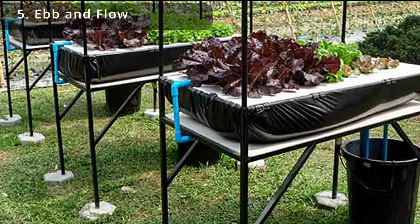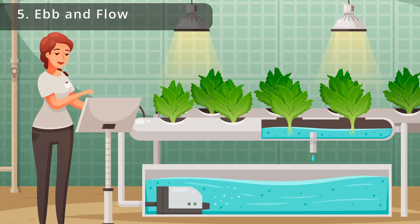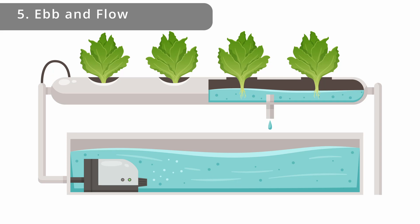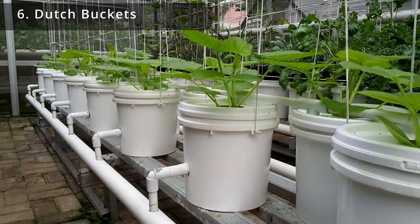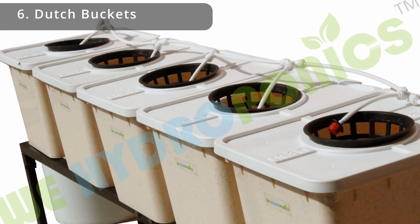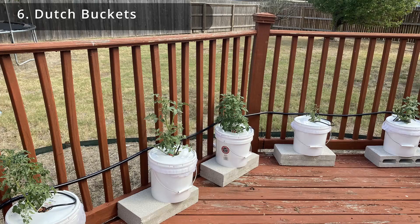The ebb and flow system, also known as the flood and drain system, is a type of hydroponic system that uses a nutrient-rich water solution that is periodically flooded into the growing area and then drained back out. The advantage of an ebb and flow system is that it is relatively simple to set up and maintain, and it is also very efficient in terms of water usage. However, the system can be prone to problems if the timing of the flooding and draining is not consistent, which can lead to uneven watering. A hybrid that falls between the ebb and flow and drip system is the Dutch bucket system — it is more like a drip system on timers. A good example is the MHP Gardener channel. He is great and is the inspiration that got me into hydroponics.